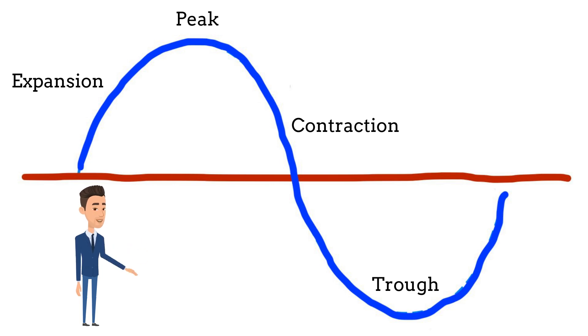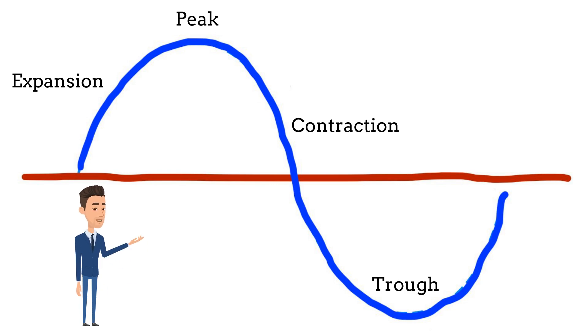Peak — this is the phase where economic activity reaches its maximum point, and the economy is operating at full capacity. In this phase, businesses have reached their maximum level of output, and consumer demand may start to decline.